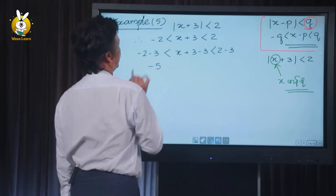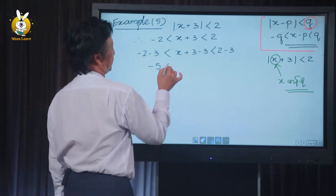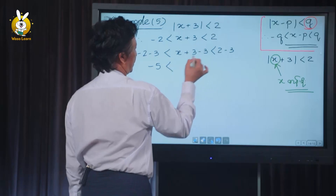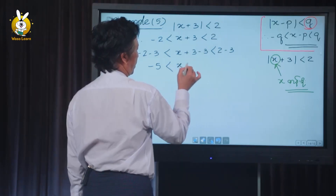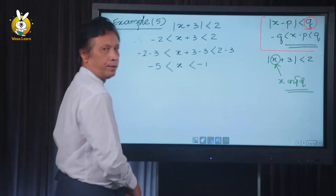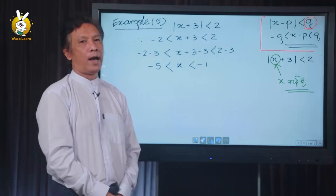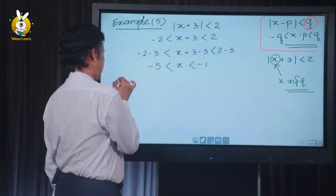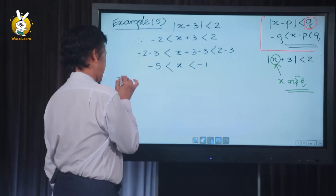We get minus three and minus five. Then minus one. Now you know the solution.